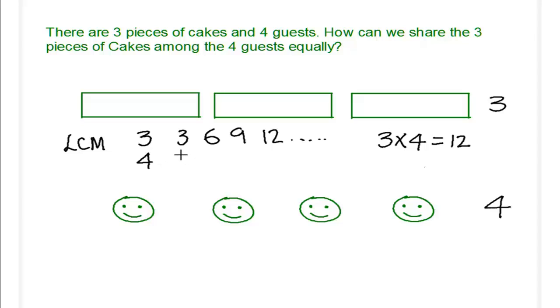For the multiples of four, we have four times one is four. Four times two is eight. Four times three is 12. Four times four is 16. And when you look at that, it's very evident that the first multiple that is common for both three and four is 12.